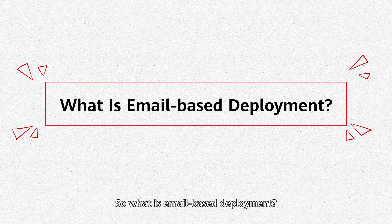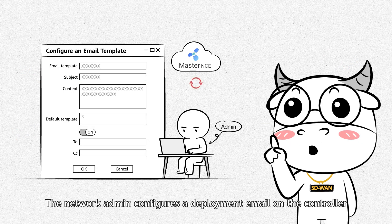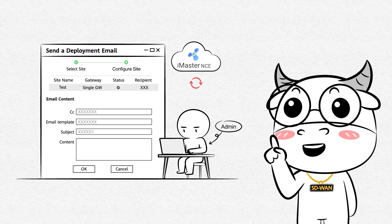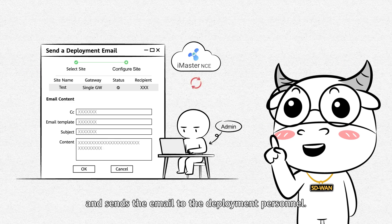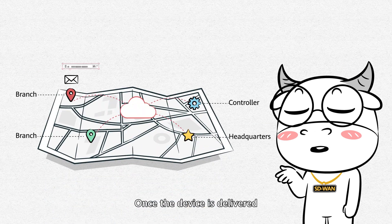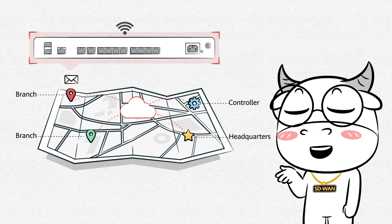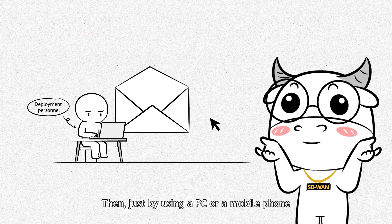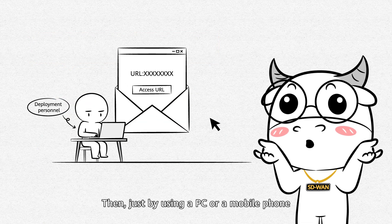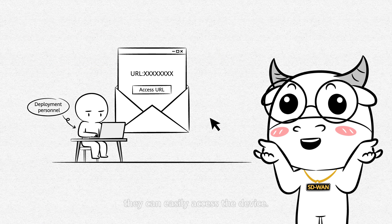So what is email-based deployment? The network admin configures a deployment email on the controller and sends the email to the deployment personnel. Once the device is delivered, the deployment personnel installs and powers on the device. Then, just by using a PC or a mobile phone, they can easily access the device.